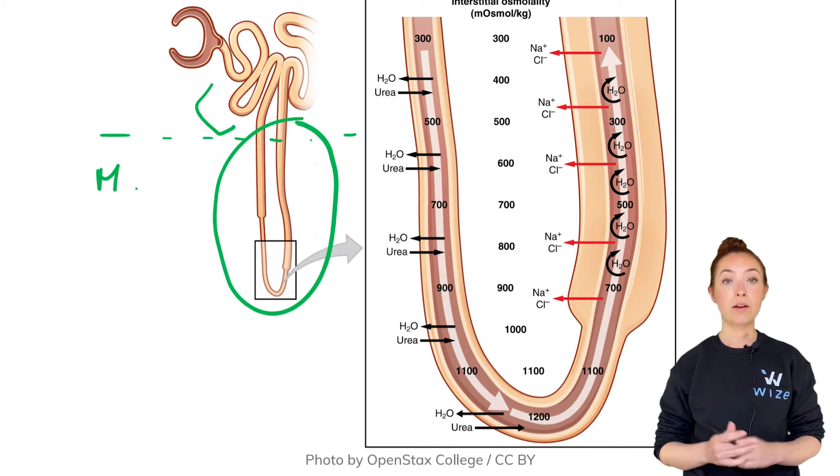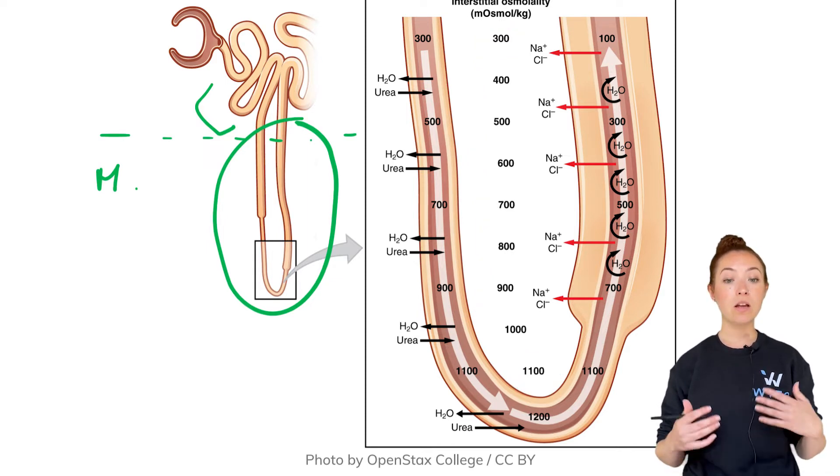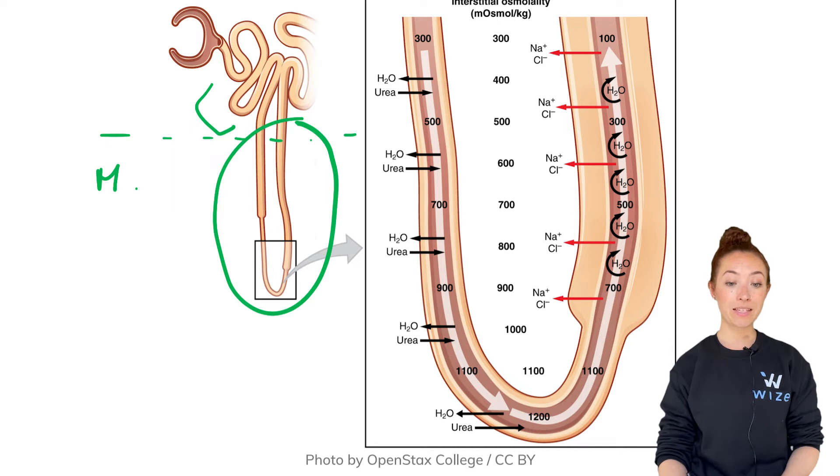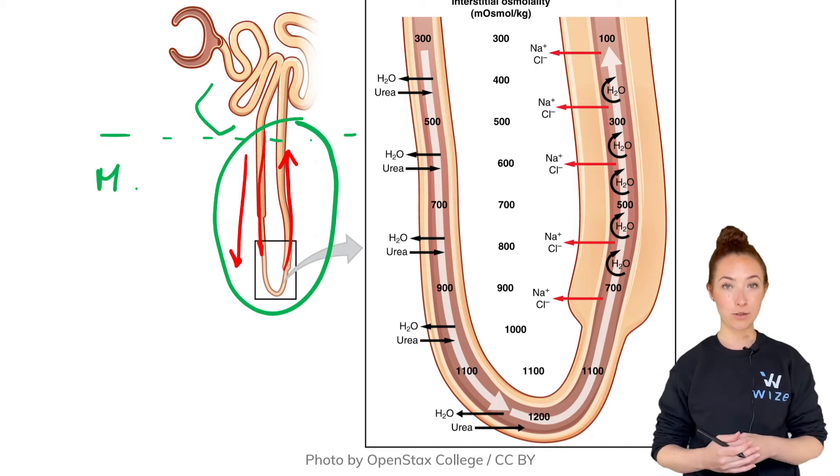The loop of Henle has two parts. The first part is this descending portion—the filtrate is going down in this direction. Then there's the ascending part of the loop of Henle, which is the part that's directly adjacent to it.